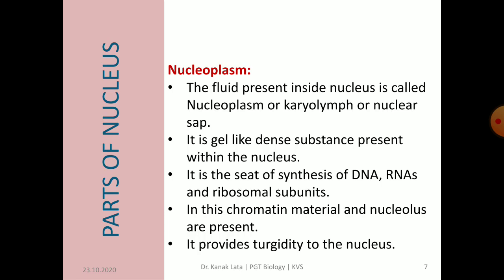Another part of the nucleus is the nucleoplasm, also called karyolymph or nuclear sap. It is the fluid present inside the nucleus — a clear, non-staining, gel-like, dense substance. It is the seat of synthesis of DNA, RNA, and ribosomal subunits. It also contains histone and non-histone proteins for combination with DNA.